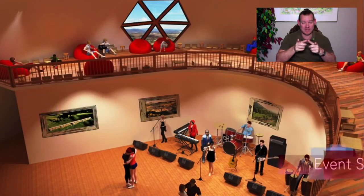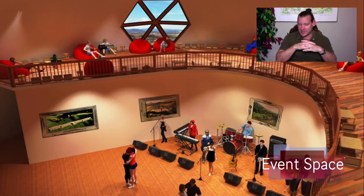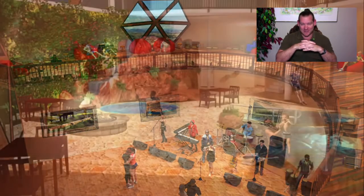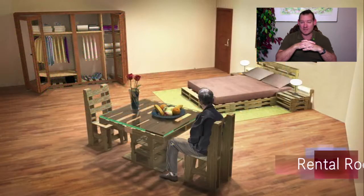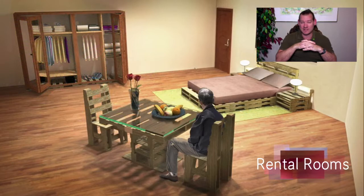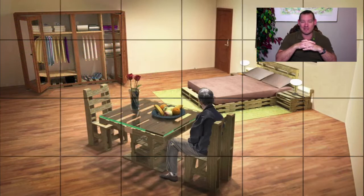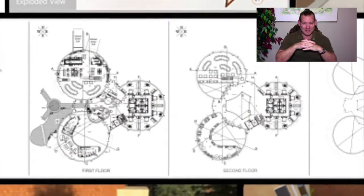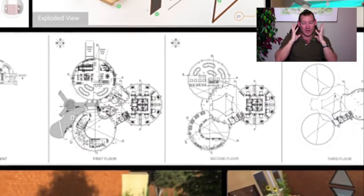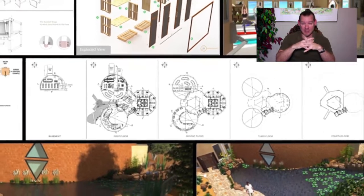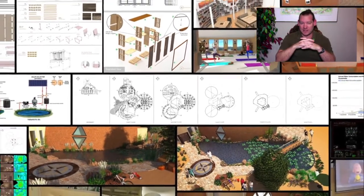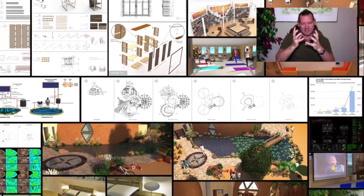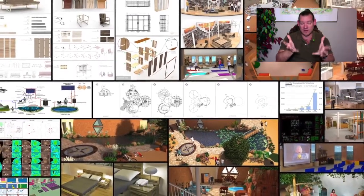One Community's mission is to bring together people with a consciousness for the highest good of all life on our planet, and to build self-replicating and sustainable teacher demonstration hubs, communities, villages, and cities as a pathway to global sustainability. We're creating a global cooperative. Today I want to talk about sustainable circular economies, because circular economies is a big part of what One Community is creating.